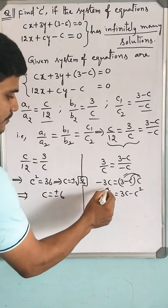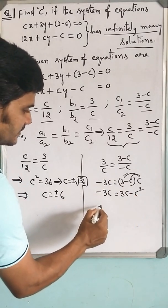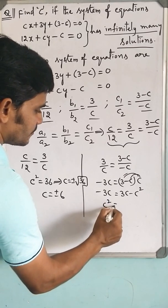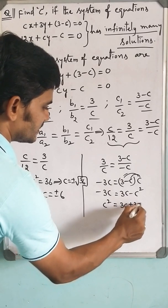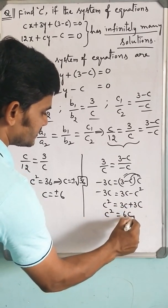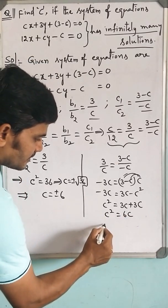3C minus C squared. Now, bring this minus 3C into the right hand side. C squared is equal to 3C plus 3C.